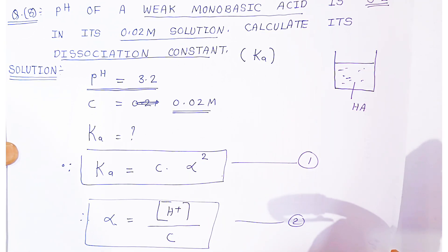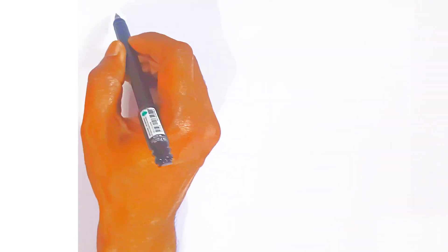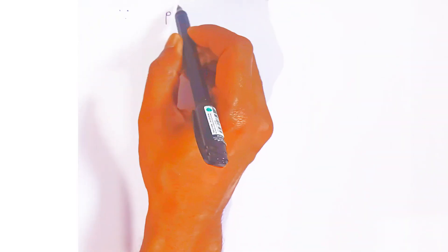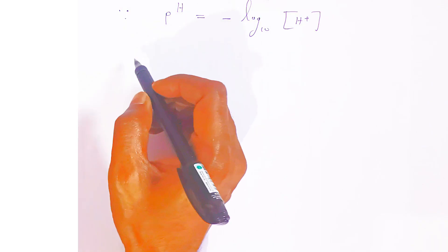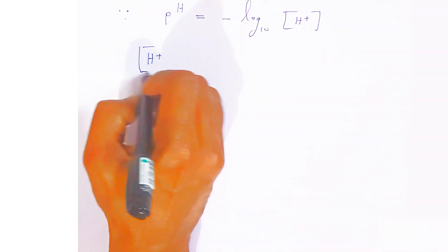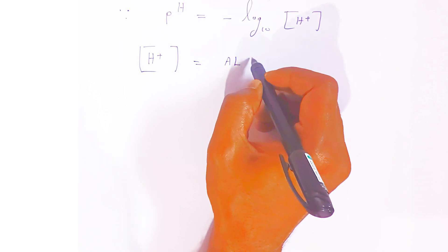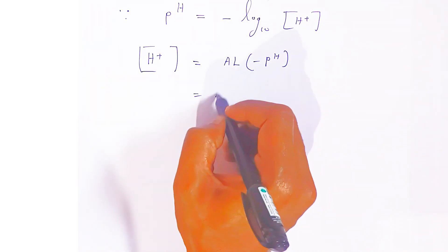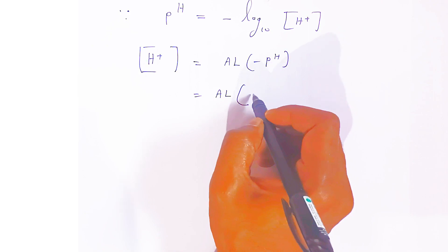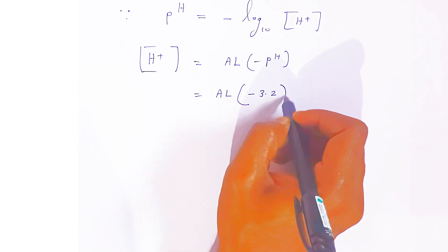First, we calculate the concentration of H⁺ ions. Since pH = −log[H⁺], the concentration of H⁺ equals the antilog of (−pH), which is the antilog of −3.2.